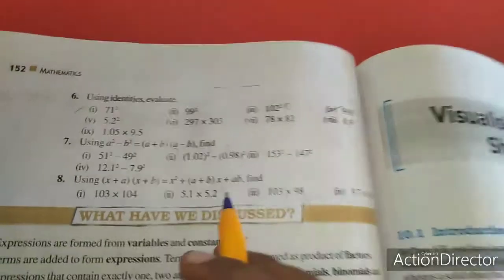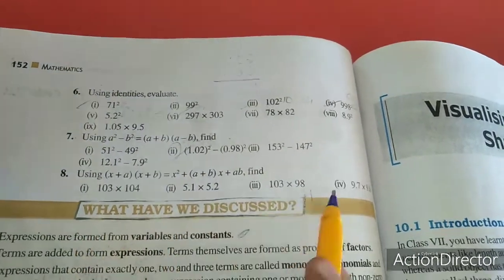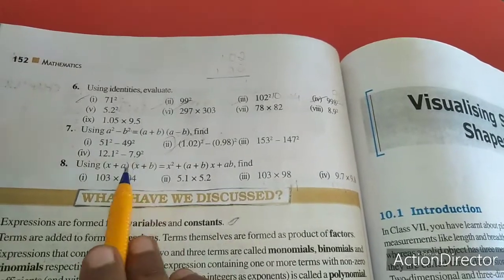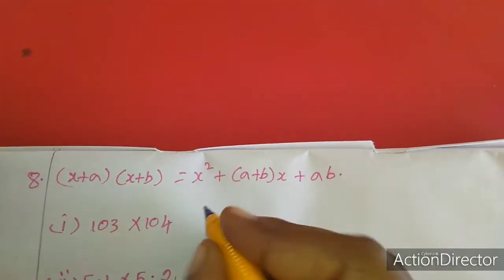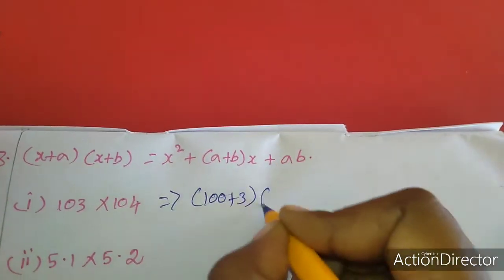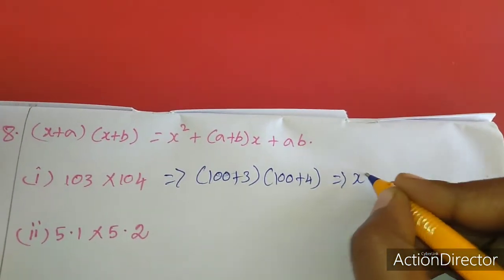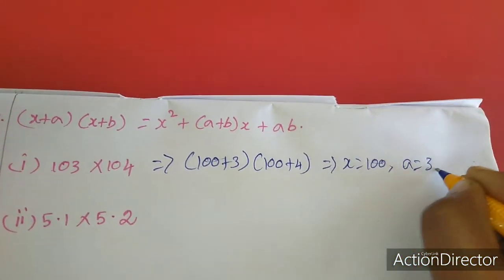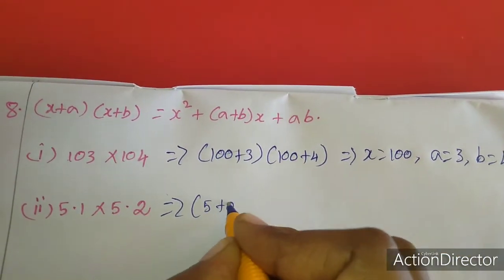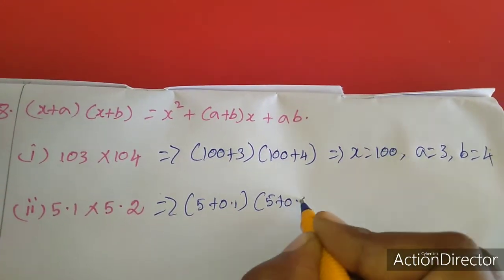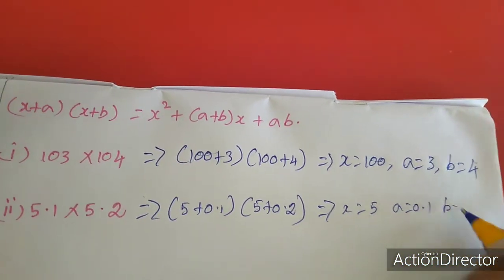Now we move to the 8th sum, using the identity x plus a times x plus b equals x squared plus a plus b times x plus ab. The first sub-sum is 103 times 104, split as 100 plus 3 times 100 plus 4. Here x value is 100, a value is 3, b value is 4. The next is 5.1 times 5.2, split as 5 plus 0.1 times 5 plus 0.2, so x is 5, a is 0.1, b is 0.2.